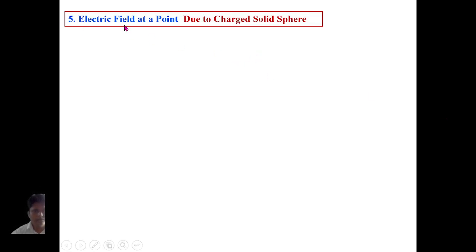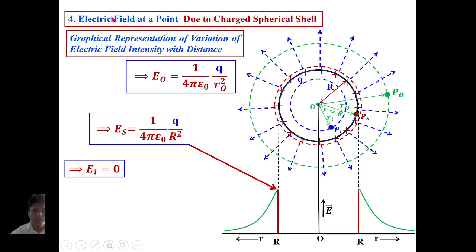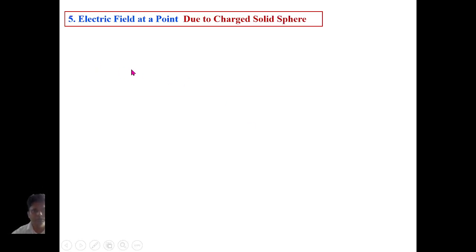Hello everyone. In this video we are going to discuss in detail about electric field at any point due to a charged solid sphere. In our last class we discussed electric field due to a charged spherical shell, where we found the field intensity outside, on the surface, and inside (which is 0), along with the graphical representation. Now we are going to discuss field intensity at any point due to a charged solid sphere.